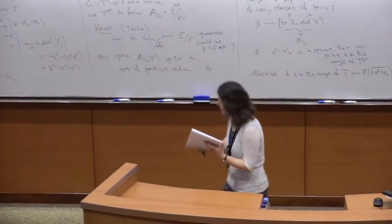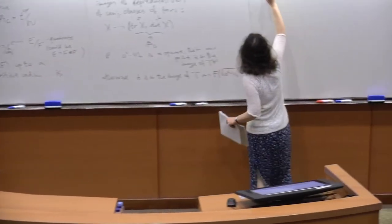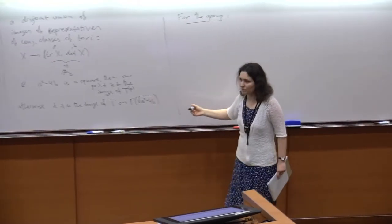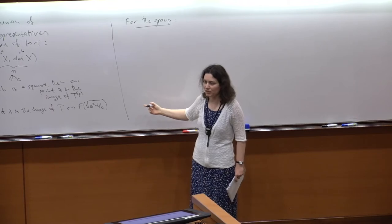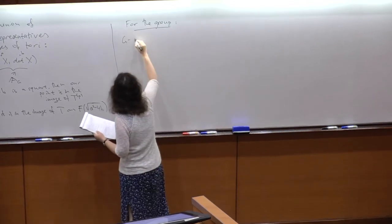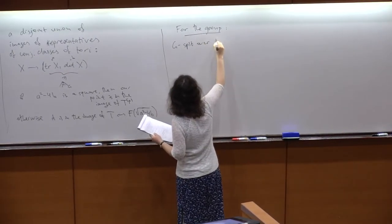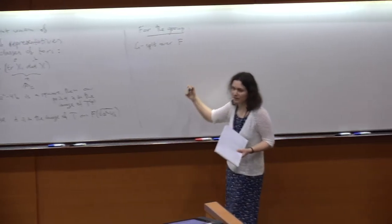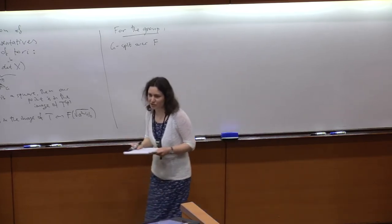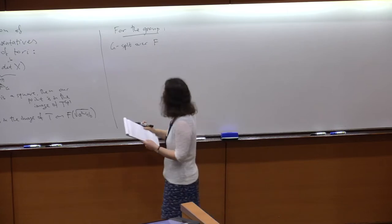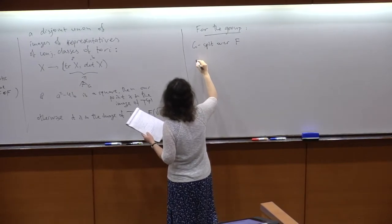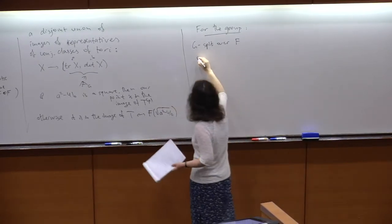By looking at the point downstairs you can tell what kind of torus it comes from — which extension it corresponds to — just by looking at the discriminant of the polynomial. Now for the group: so far I've described stable orbits in the Lie algebra, but I want stable conjugacy classes in the group itself. I'll assume G is split over F, though Frenkel-Langlands-Gaitsgory don't assume that.